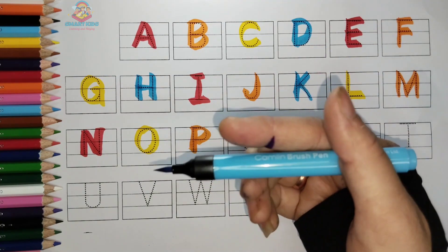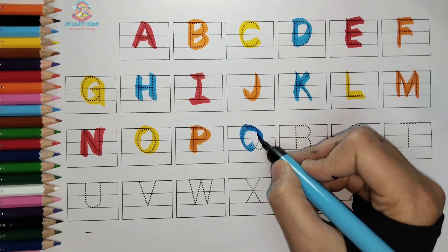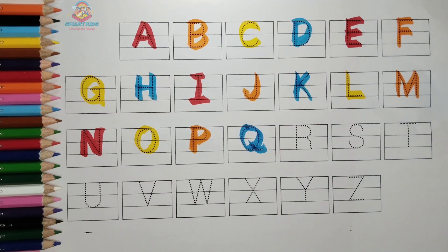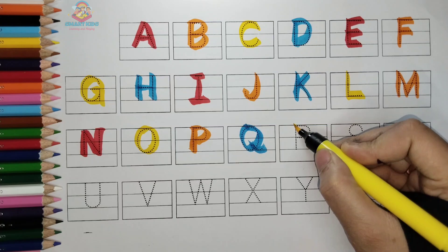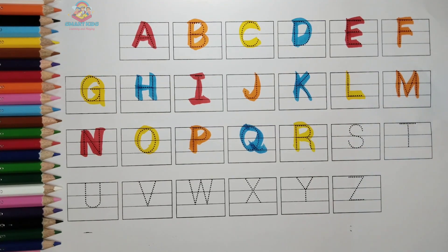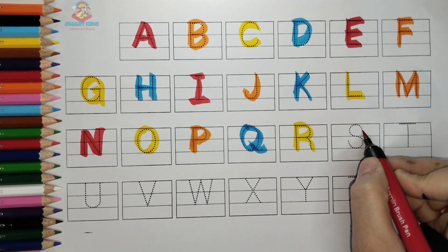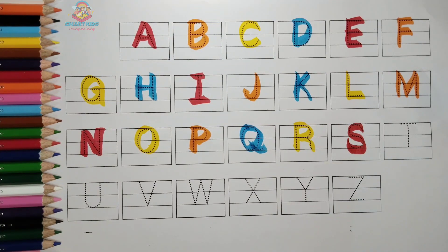Sky blue color. Q, Q for quill. Yellow color. R, R for rose. Red color. S, S for sun.